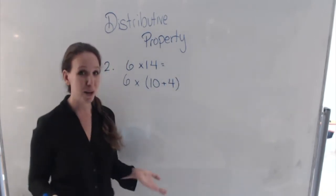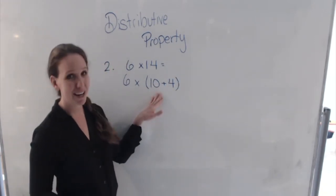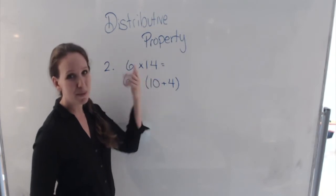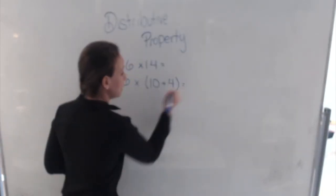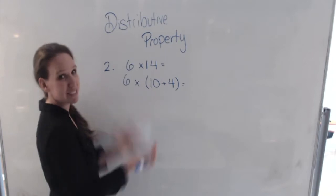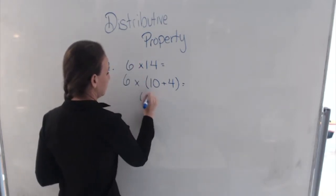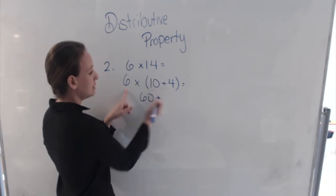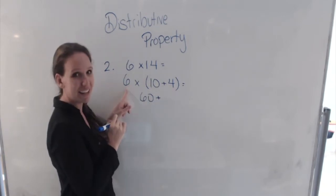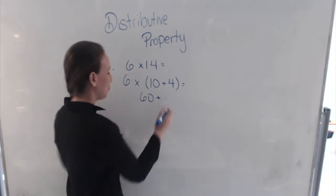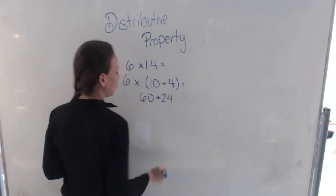If you notice what I'm doing here, each time I'm writing it as my tens plus my ones. It's the easiest way to multiply because 6 times 10, we know right away, is 60. And plus 6 times 4 is 24. If you said that, you'd be right.